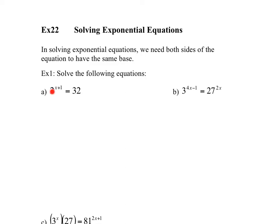So for example, in here, we have a 2 as a base, so we'd like to change the 32 as a base of 2. And we can do that quite easily. So what we have is 2 to the power of x plus 1 equals 2 to the power of 5, because 32 is 2 to the power of 5.